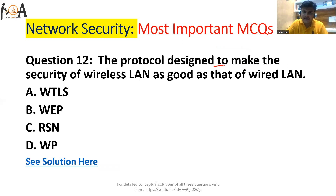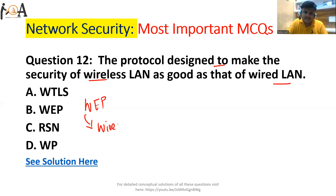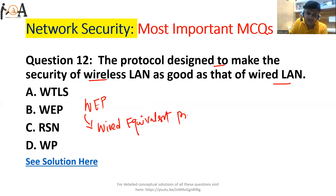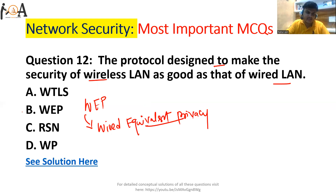The next question is: the protocol designed to make the security of wireless LAN as good as that of wired LAN. You can find it directly from the terminology itself — that is WEP, where W stands for Wired, as in Wired Equivalent Privacy. WEP provides the equivalent security of a wired network. So WEP is the correct answer.